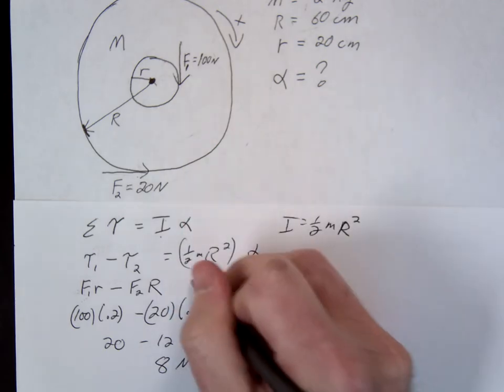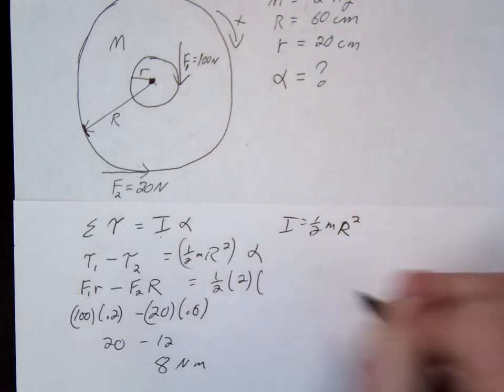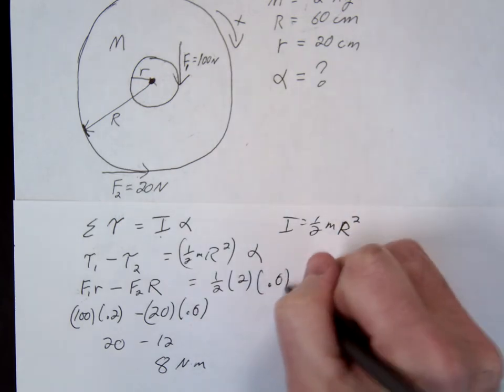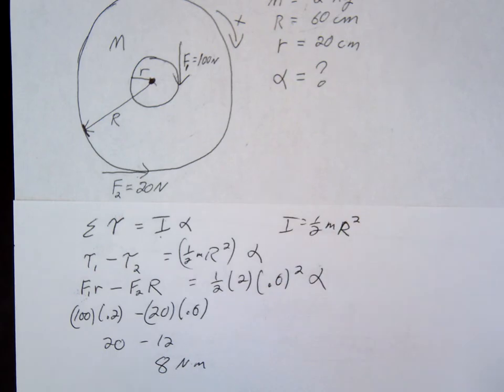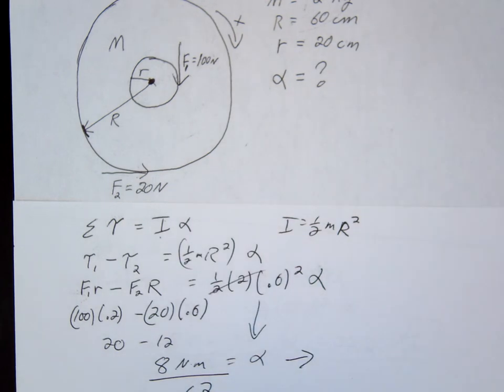So that'll be one half m big R squared times alpha. One half, m was 2, and R was 0.6 squared alpha. Ultimately alpha is going to be 8 divided by 0.6 squared.